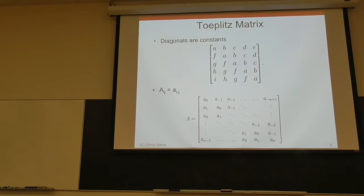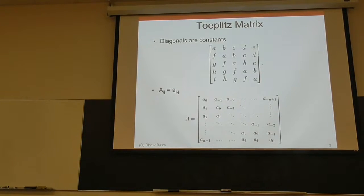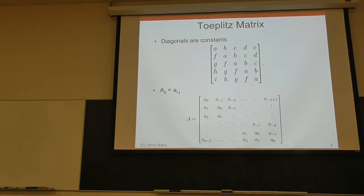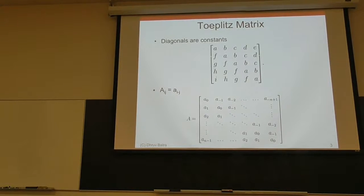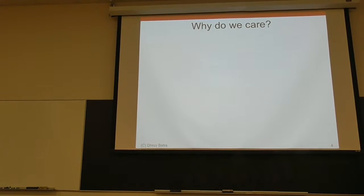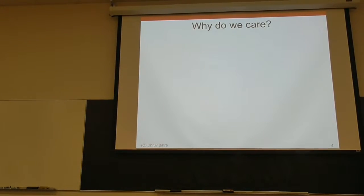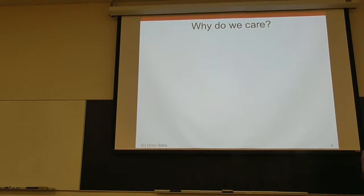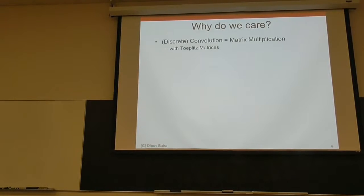We're not mathematicians, but there are some elegant properties: these matrices only have 2n minus 1 free parameters, not n squared, which means linear systems are easy to solve. But why do we care? Machine learning people — why do we care about Toeplitz matrices? Convolutions versus matrix multiplications — exactly.